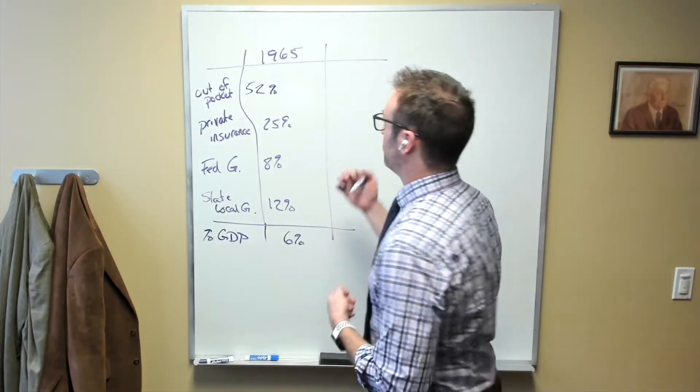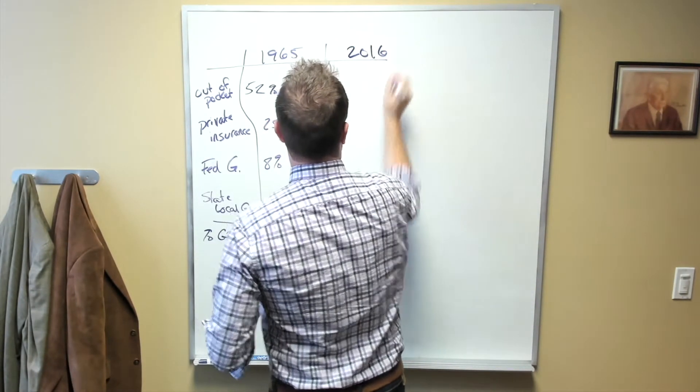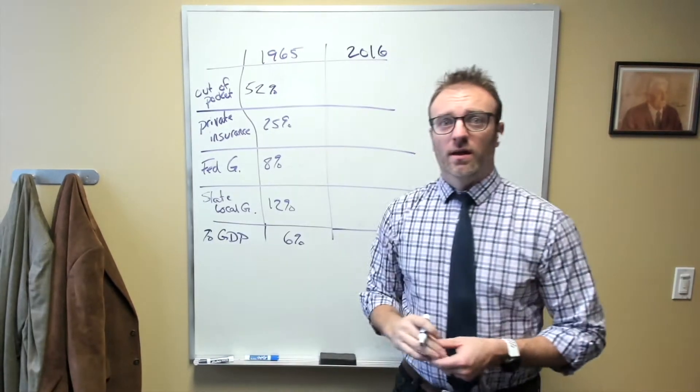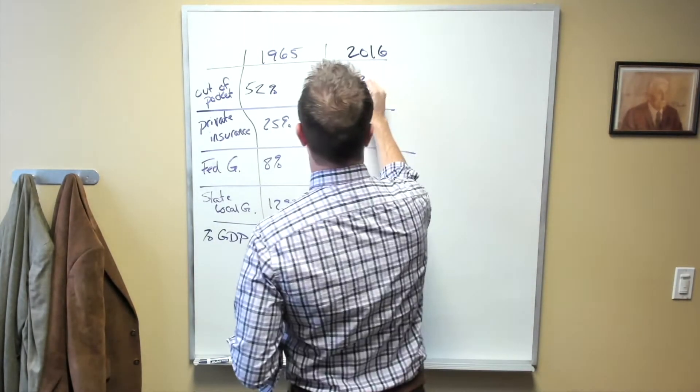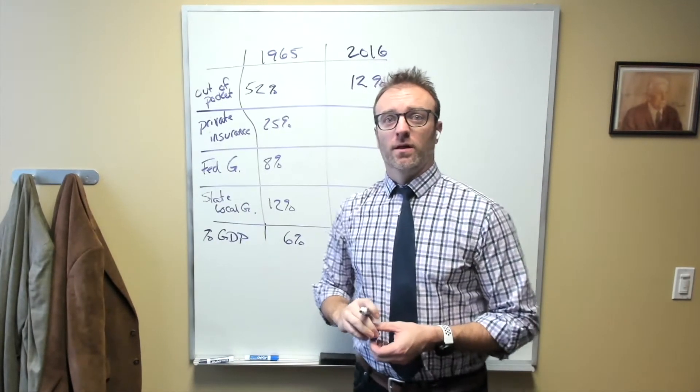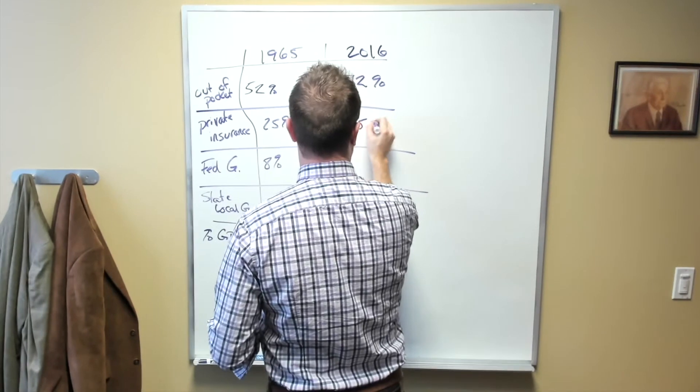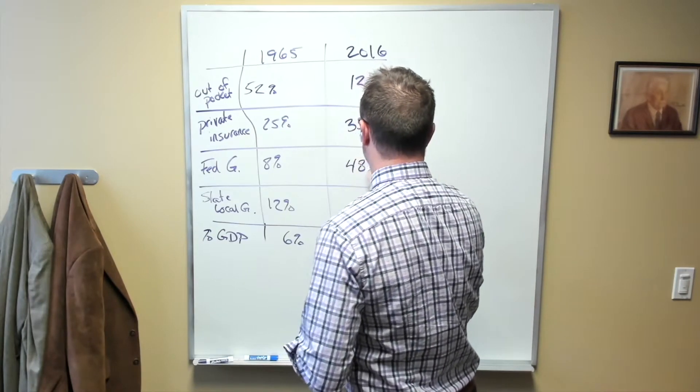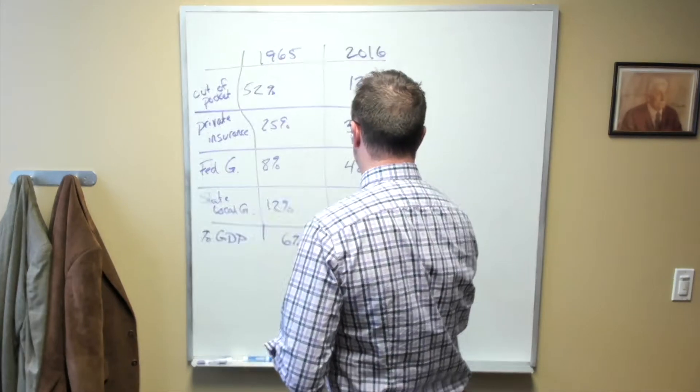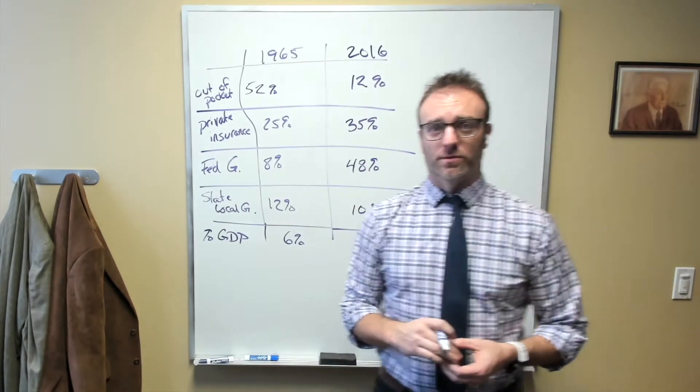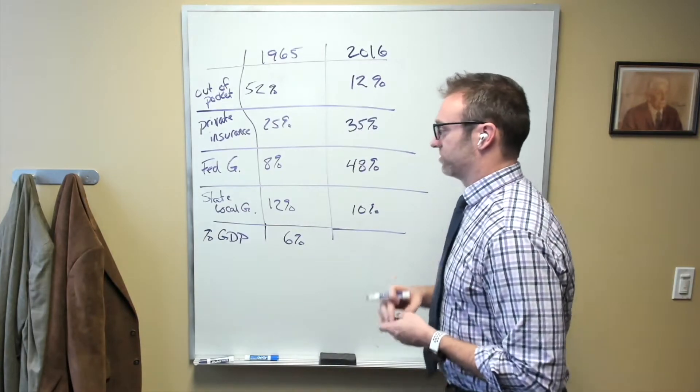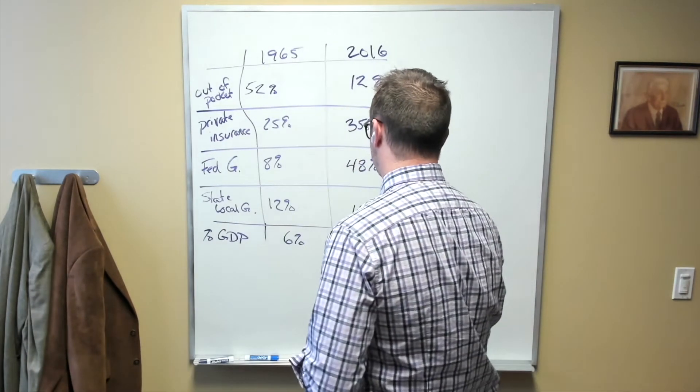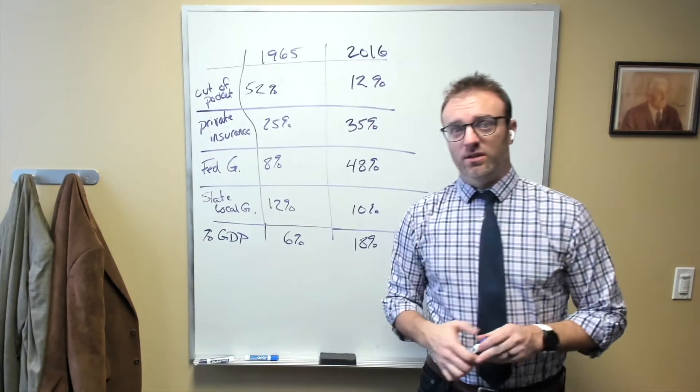Now we can fast forward to 2016 and we can look at these numbers again. Out-of-pocket expenses have fallen to only 12% of the total bill for health care. 35% of our health care costs are paid for by private insurance companies. 48% is paid by the federal government. And the remaining 10% or so is paid for by state and local governments.